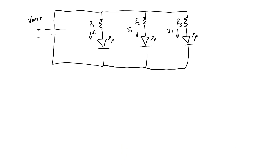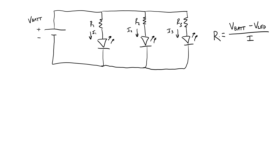In those earlier videos, we saw that the equation to choose a resistor value for a single LED — with a known battery voltage and known forward voltage drop across the LED, which depends on the LED's color — is the battery voltage minus the LED voltage, divided by the desired current through the LED. Since the resistor is in series with the LED, the current through them must be the same. This comes from applying Ohm's law to the resistor. We're just going to take this equation as a given.